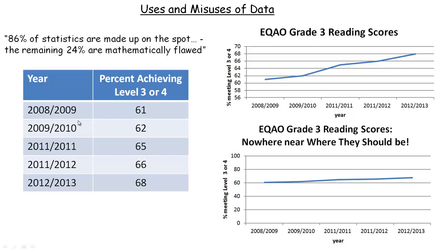Here's some EQAO data — these are percentages. 61% in this year had a level 3 or 4, 62% in this year, 65% in this year. I want to show two different ways to present the same data depending on your intent — to persuade the reader or not. These two graphs show exactly the same thing in different ways. In this one, the vertical scale goes from 56 to 70, not the whole 0 to 100 like the bottom one.